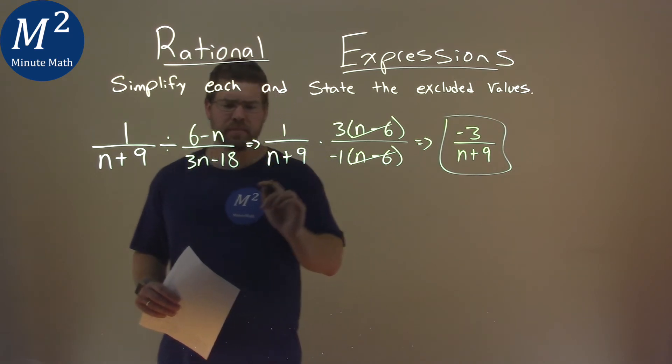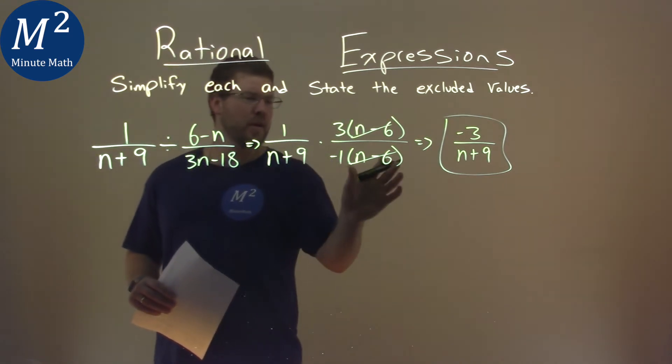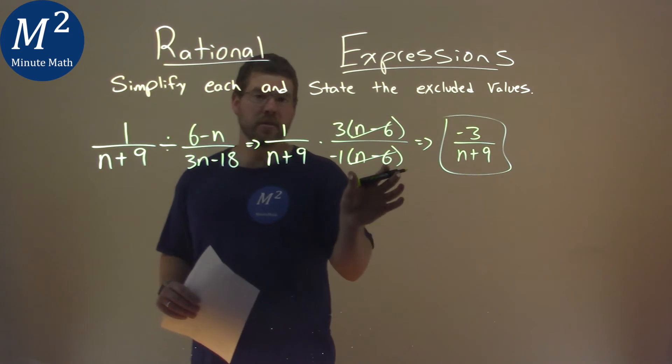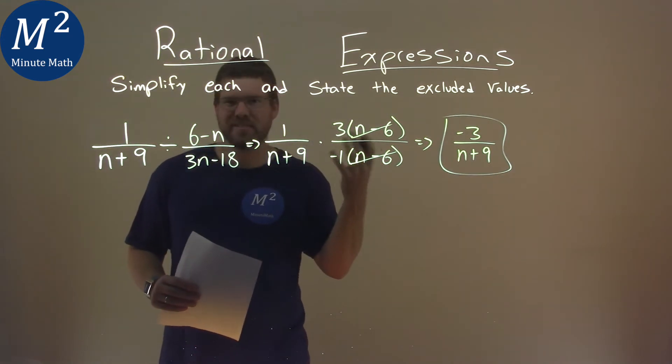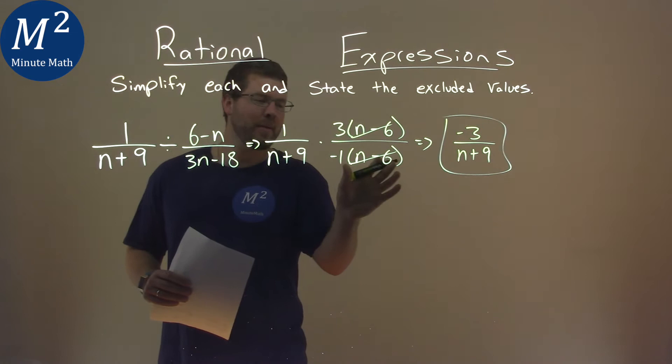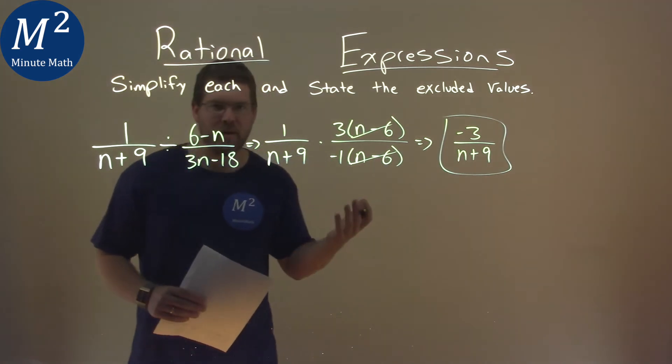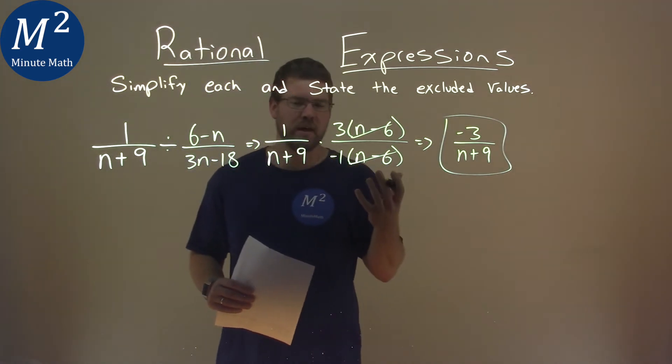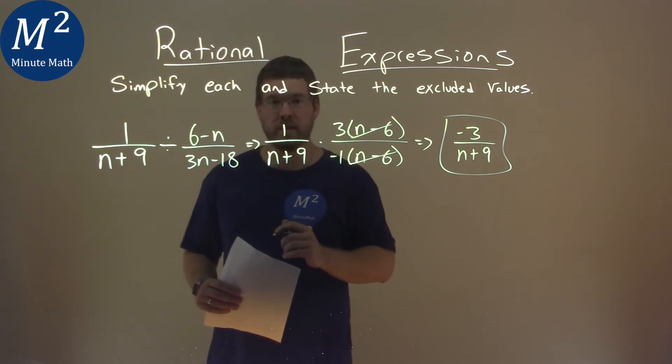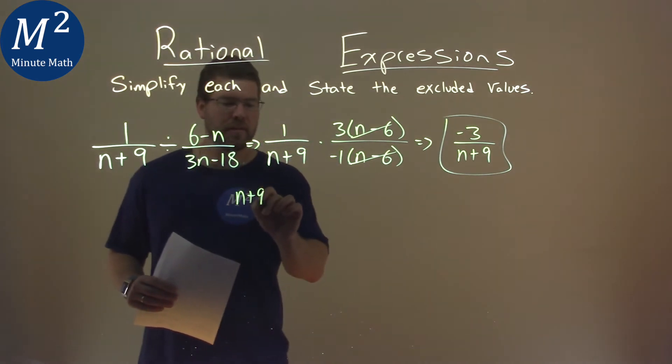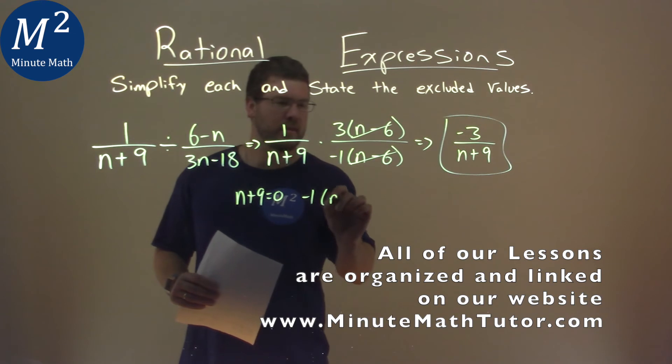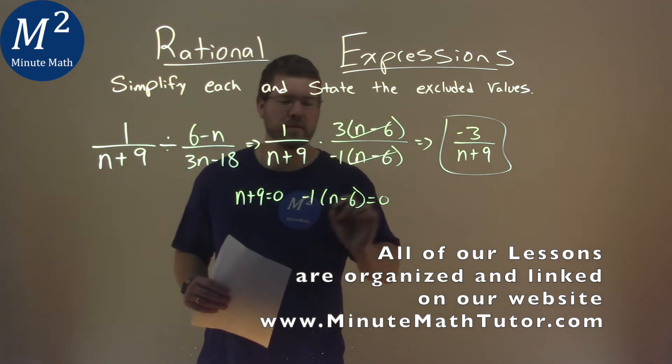...and we're going to set basically each part here equal to 0 because that's when we can't... well, basically if the denominator is equal to 0, we can't divide by 0 and that tells us the excluded value. So we're going to find the n values that cause that. So we have n plus 9, is that equal to 0? And negative 1 times n minus 6 equal to 0.